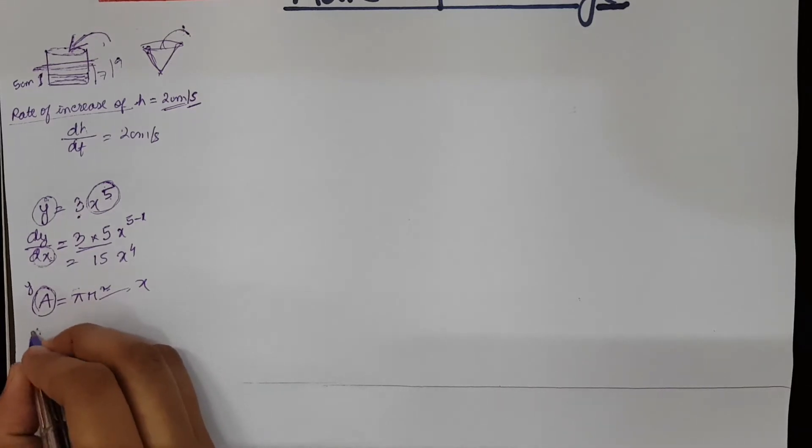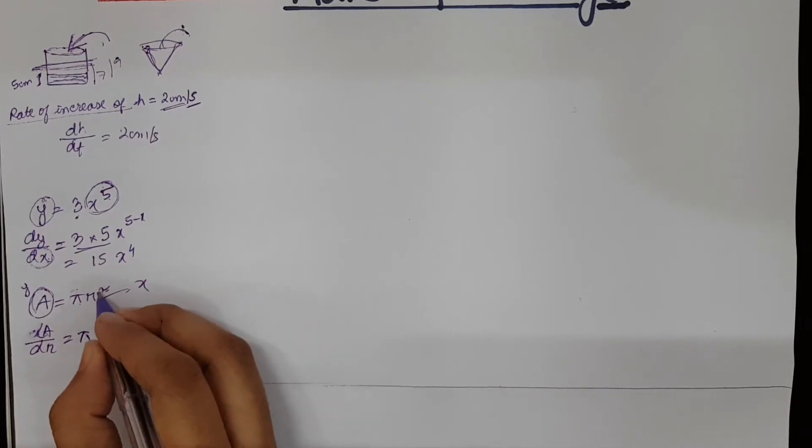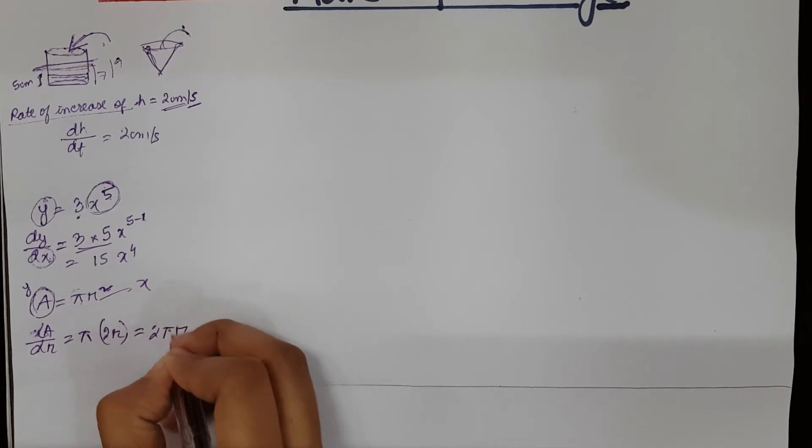So if I differentiate this, it becomes dA/dr. So π will stay there. So differentiation of r² is what? 2r. So the answer becomes 2πr.